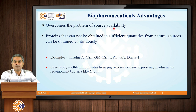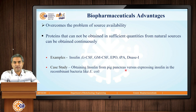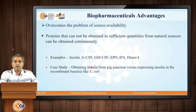The first and foremost advantage is to overcome the problem of source availability. To understand this, we take the case of insulin. In the previous era before 1980, where recombinant technology was not known, insulin was produced by extracting it from pig pancreas. However, the source availability of pig pancreas was not sufficient. Post the recombinant DNA technology breakthrough, the technology was switched from extraction from pancreas to expressing insulin in recombinant E. coli, that is bacterial expression. This gives us the advantage that whatever the demand for insulin throughout the world, we are able to produce it continuously in industries without depending on any native source like pig pancreas.